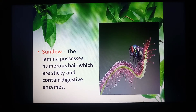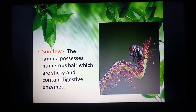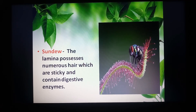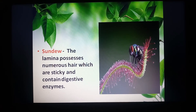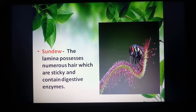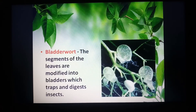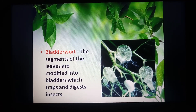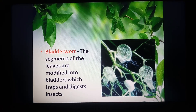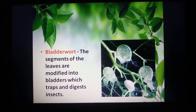This is sundew, where the lamina possesses numerous hair-like projections. If you look at the diagram, you will see a sticky substance at the tip of each hair-like projection. These are enzymes that attract insects, and once the insect sits on the hair-like structure, the sensory cells trap the insect and digest its juices. Bladderwort is found in water bodies, where segments of the leaves are modified into bladders that trap and digest insect juices.